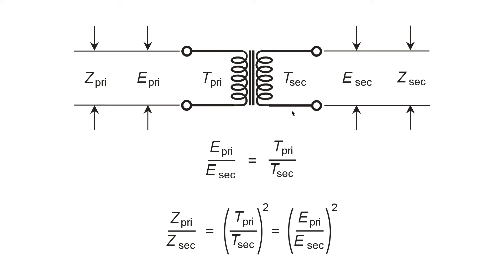Or, if you prefer to step up, if the primary has, say, 100 turns and the secondary has 400 turns, you might apply 120 volts here and get 480 here. 120 over 480 equals 100 to 400.